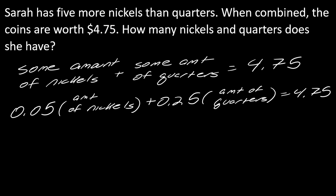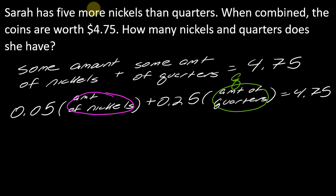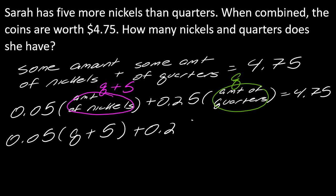Now I have to think about how do I express the quantity of nickels and quarters. There are five more nickels than quarters, so the amount of nickels is being expressed in terms of the quarters. I don't know how many quarters there are, so I'll write that as q. For the amount of nickels, I need five more than quarters, so my amount of nickels will be q plus 5. So now I've got my setup: 0.05 times (q + 5) plus 0.25 times q equals 4.75.